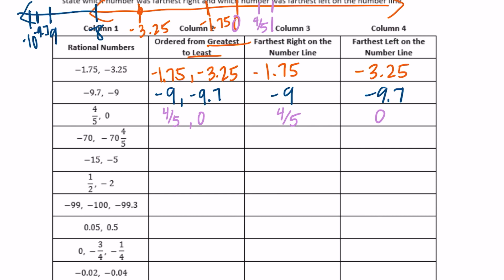Negative 70 and negative 70 and 4 fifths. This is kind of like the negative 9 one we just did. Negative 70 is going to be greater than negative 70 and 4 fifths because it's closer to 0. So the order is: negative 70, then negative 70 and 4 fifths.